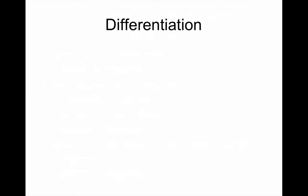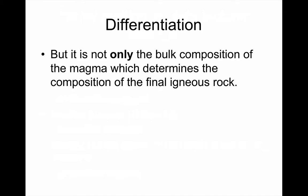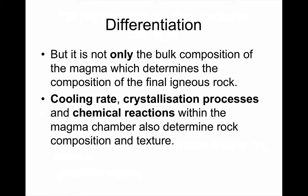But it's not the only source, or not the only control, should I say, on the magma. It's not just the original composition of the melt which determines what rock we get at the end. There are a whole series of what we call magma differentiation processes. These include the cooling rate has an effect, the processes of crystallization, and also chemical reactions that happen within the magma chamber also help determine the final composition and texture of an igneous rock.